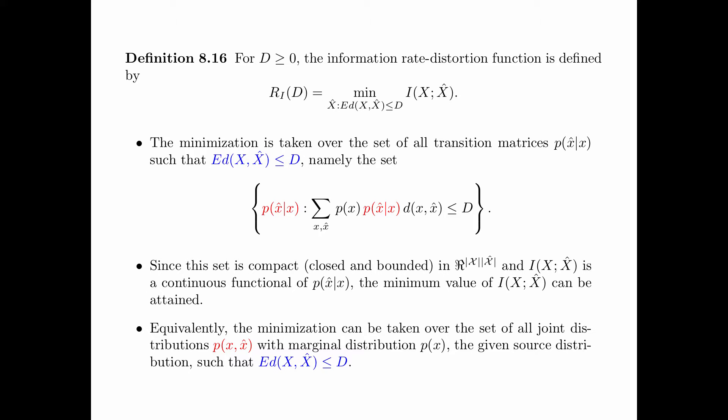Equivalently, the minimization can be taken over the set of all joint distributions p(x, x-hat) with marginal distribution p(x) — the given source distribution — such that the expected distortion between x and x-hat is less than or equal to d. This is just another way to state the minimization problem.